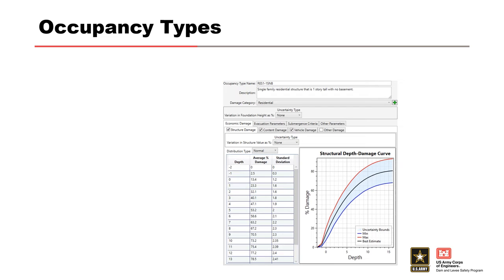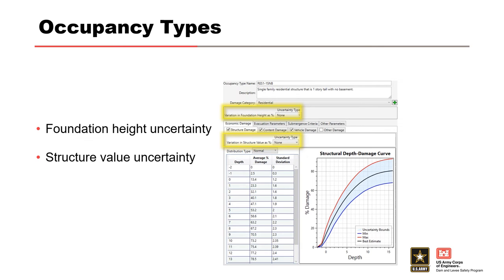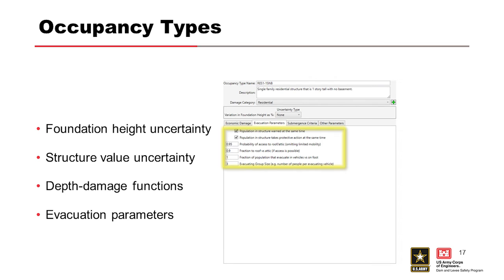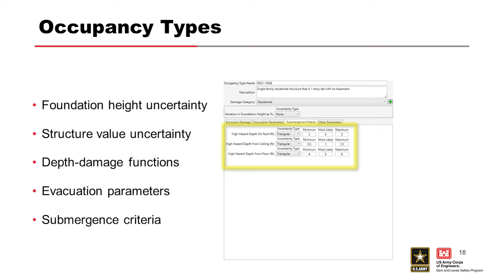Occupancy types include foundation height uncertainty, structure value uncertainty, and depth damage functions, as well as evacuation parameters. Other occupancy type attributes include foundation height uncertainty, structure value uncertainty, depth damage functions, evacuation parameters, and submergence criteria.